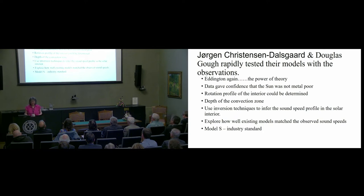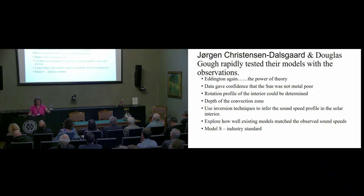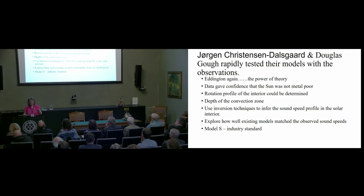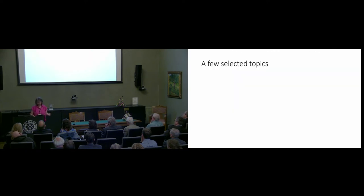Jan and Douglas set to work. And now I have to go back to Eddington and say he had a point — theory is very powerful. They had lots of inferences they could draw. The Sun's not metal poor. Rotation rate in the interior can be determined. I think it's true to say they settled the depth of the convection zone for the first time — I think they deepened it to make it bigger. And they could use inversion techniques to model the solar interior. We've seen plots of how well existing models matched the observations, but it wasn't good enough. And you've been introduced to model S, which I call the industry standard.